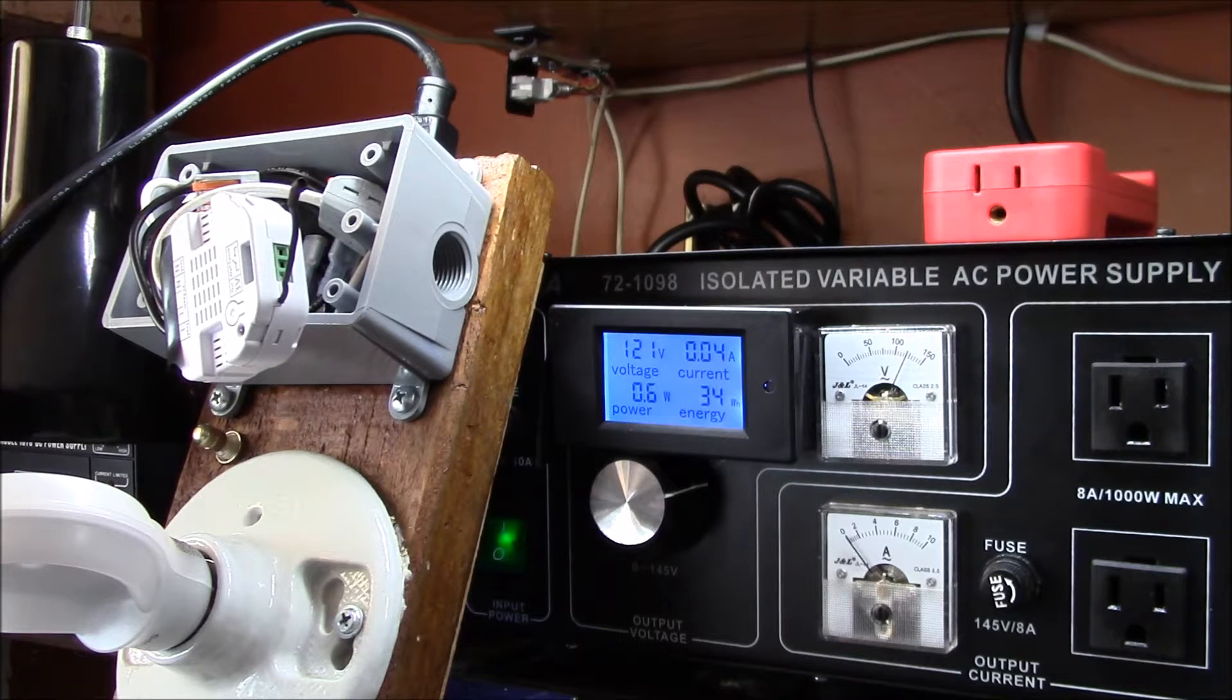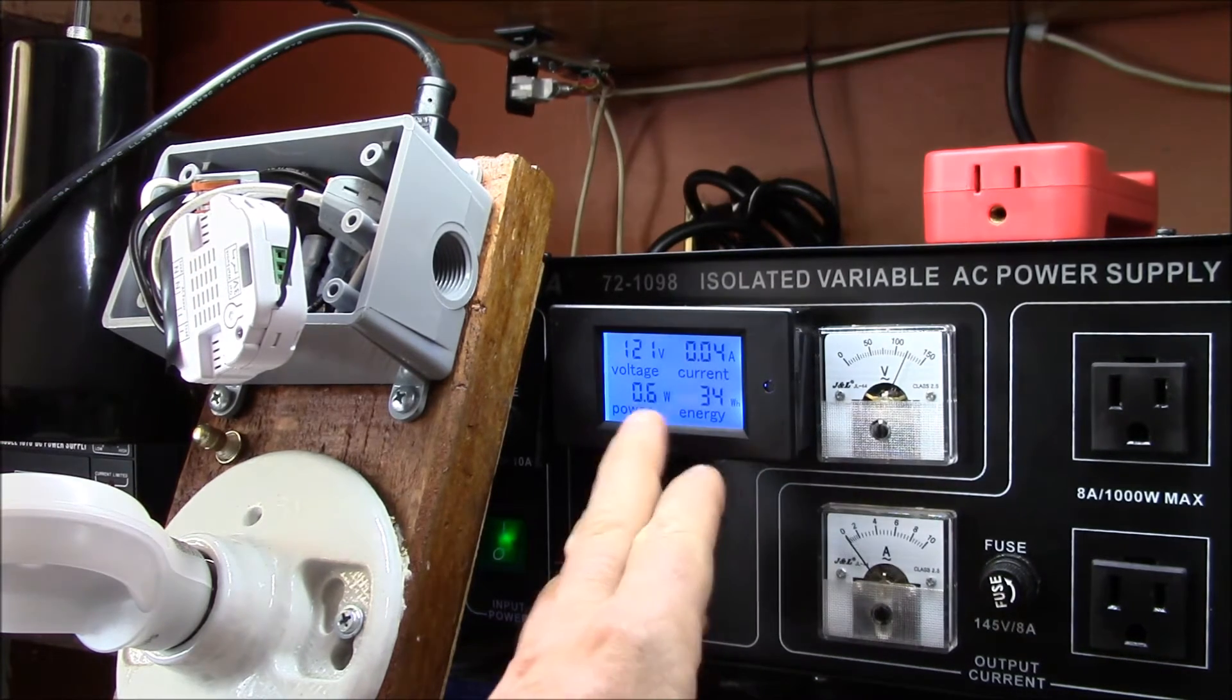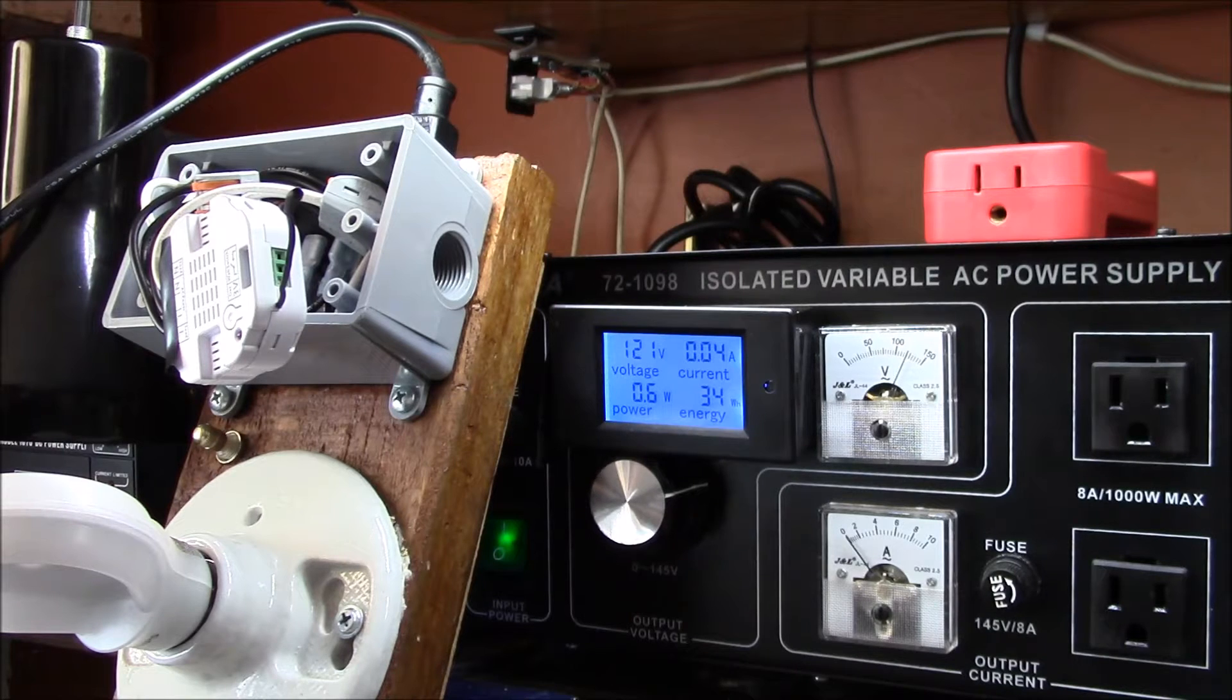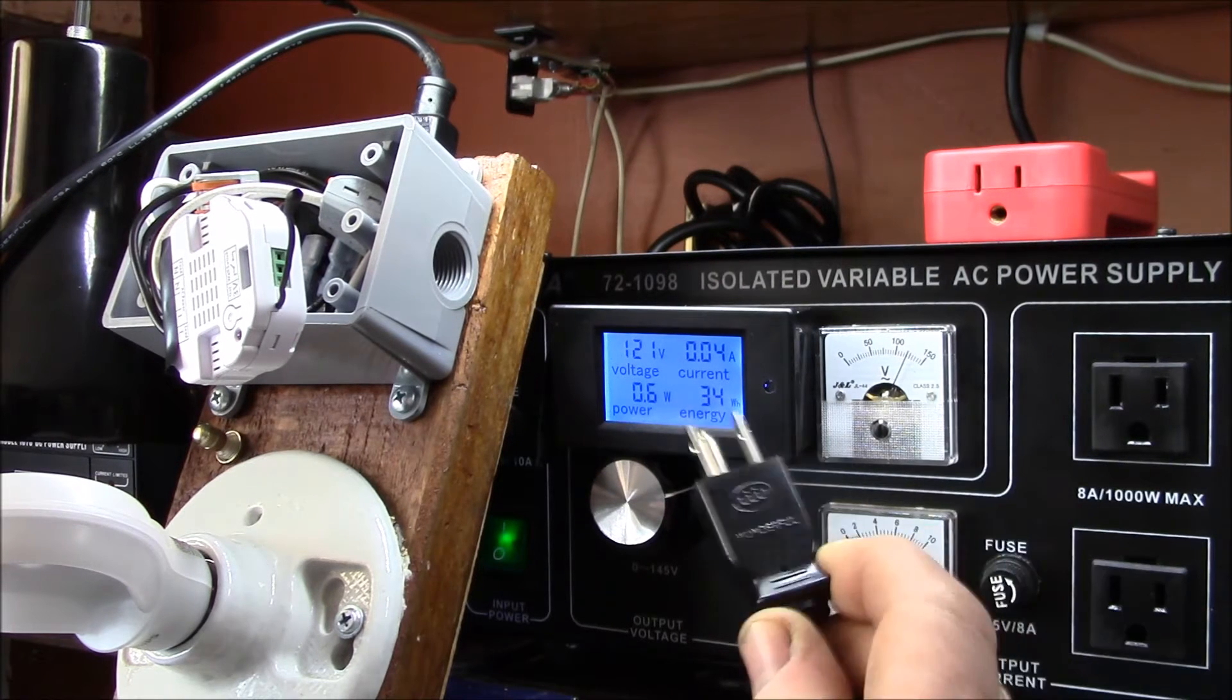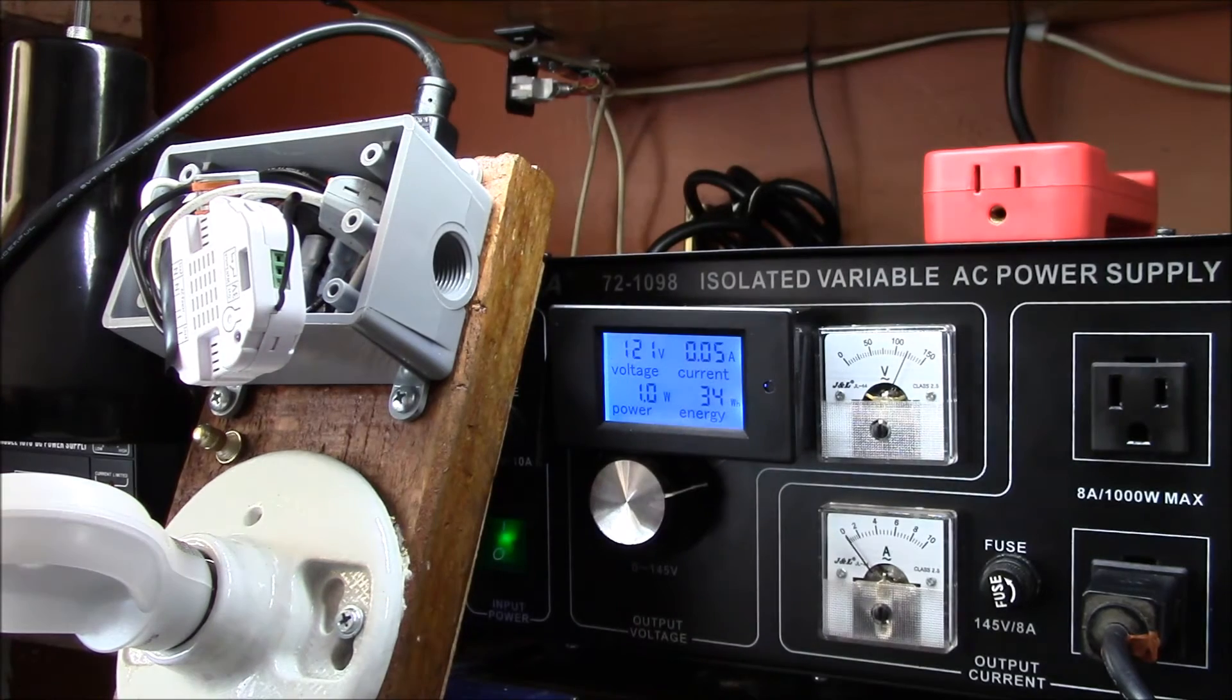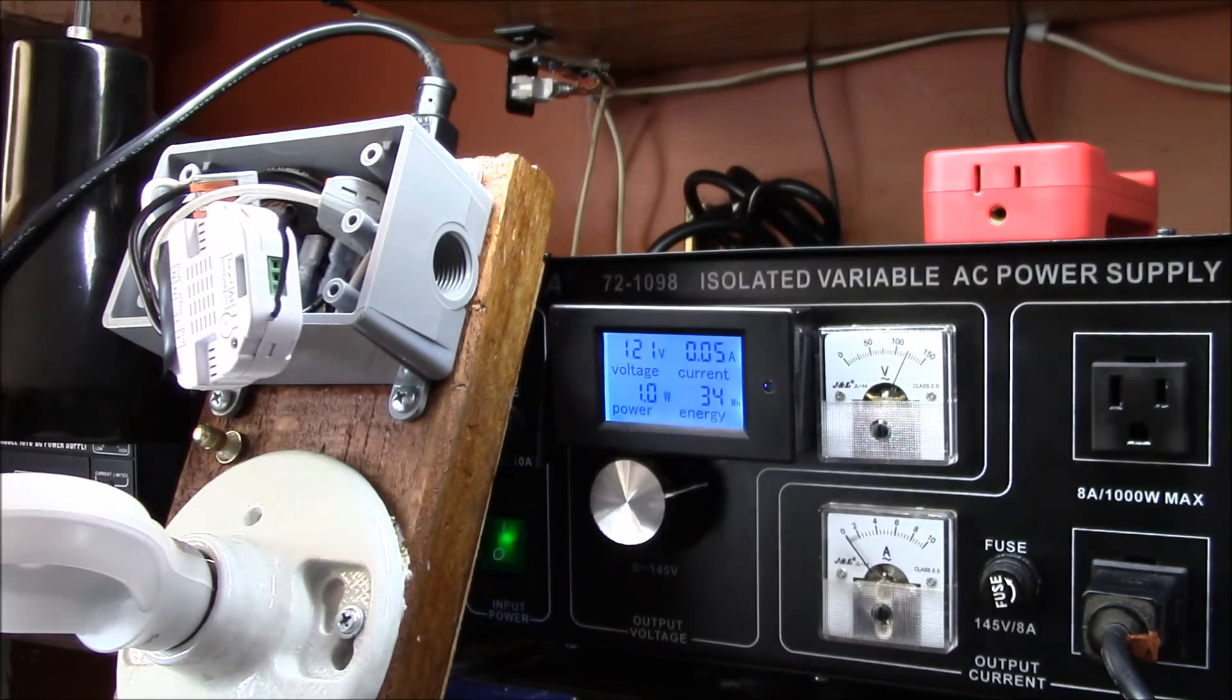Here is my bench supply. Right now it's reading 0.6 watts—that's kind of its no-load power reading. So let's plug in my light bar, and that jumps from 0.6 up to 1 watt and the current went from 40 to 50 milliamps.